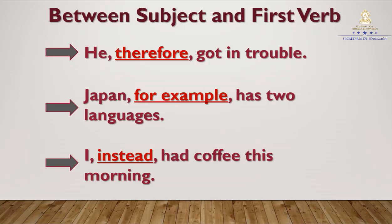Ok, now repeat after me. Number one: He, therefore, got in trouble. Number two: Japan, for example, has two languages. Number three: I, instead, had coffee this morning. Great.